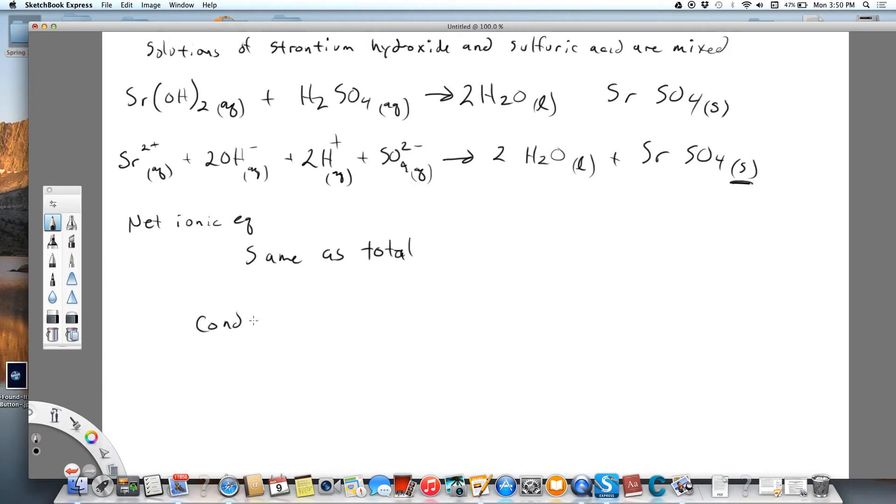But what about the conductivity? Will there be any conductivity? Well, if we react these exactly in the one-to-one ratio, as we see in the balanced equation, then everything will either be water or precipitate. So there will be no conductivity, and the reason for that is we have no ions left. There's no ions on product side of the equation, so there's no conductivity.